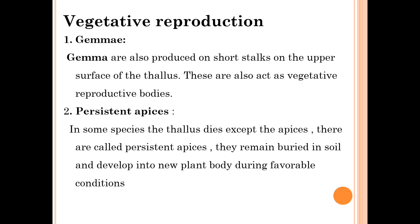Vegetative reproduction also occurs due to gemma formation. Gemmae are produced on short stalks on the upper surface of the thallus. These also act as vegetative reproductive bodies. In some species, persistent apices are present.